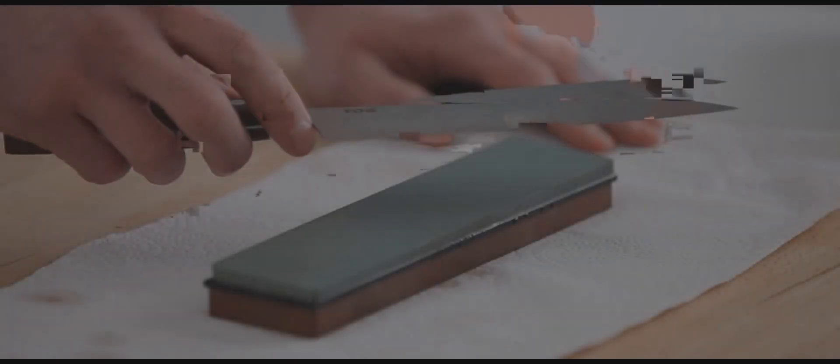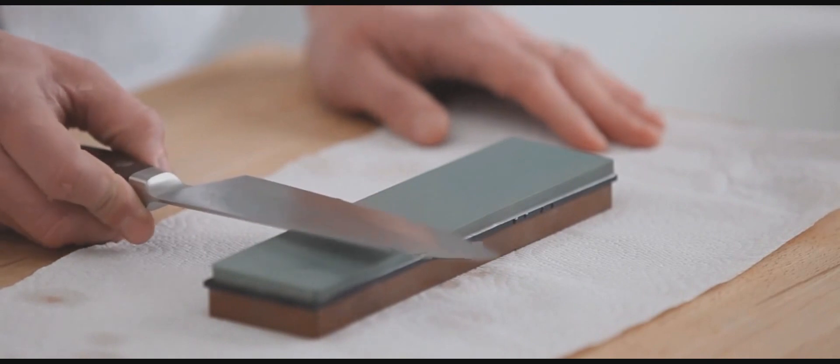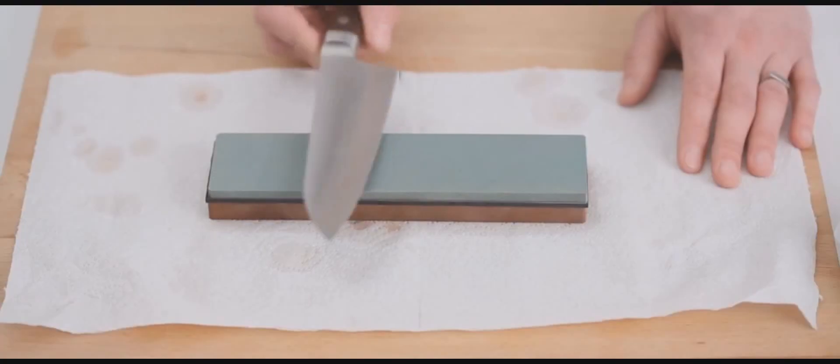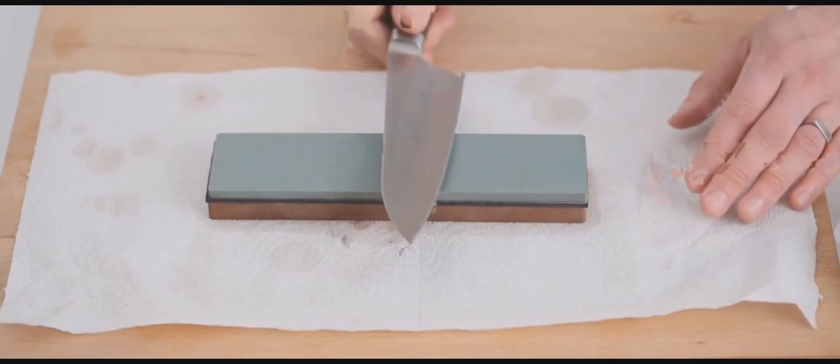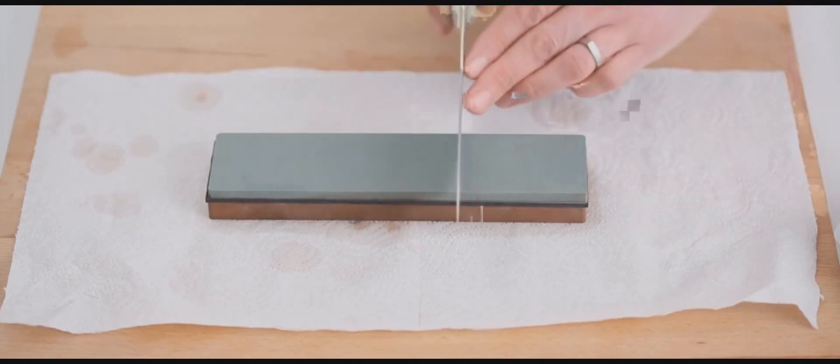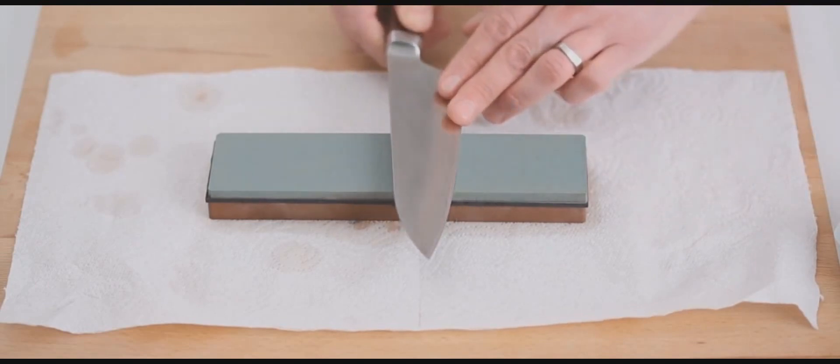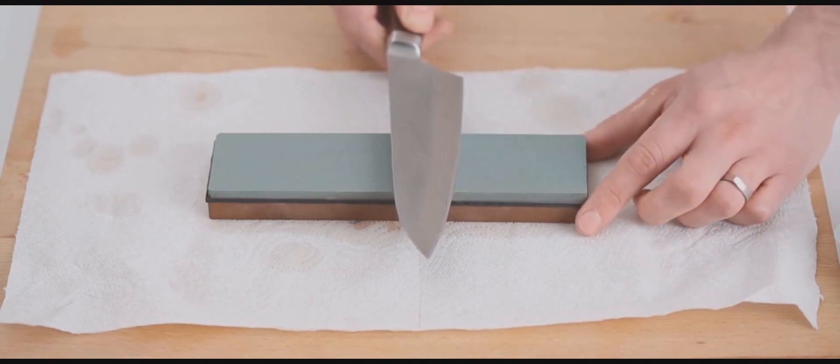It is ground in the factory at 10 degrees each side, so the angle is really important. One thing to remember is to keep the angle constant throughout the grinding process. So 10 degrees is quite a shallow angle. If you imagine that's 90, that's 45, if you halve it, halve it again to 20, and then 10 is a very shallow angle like that.